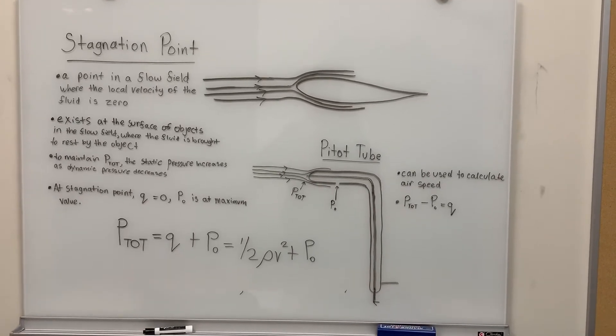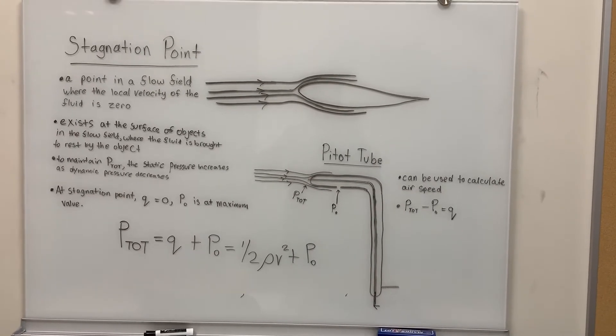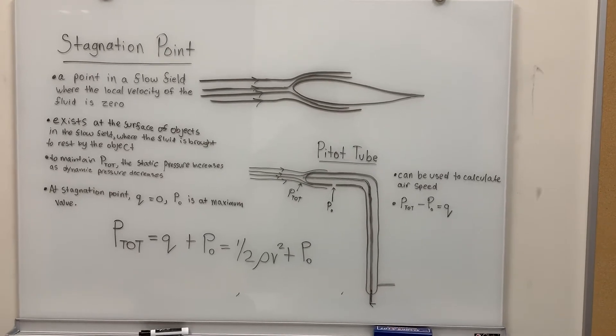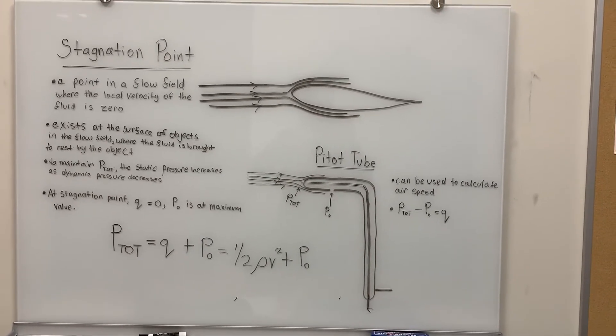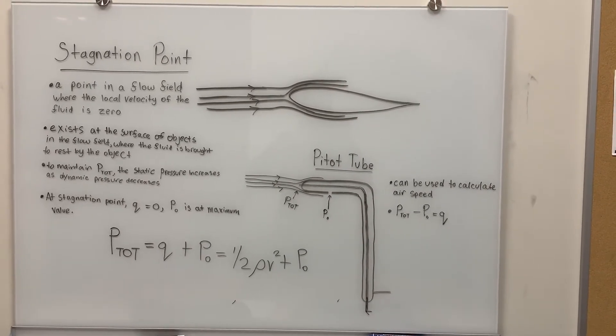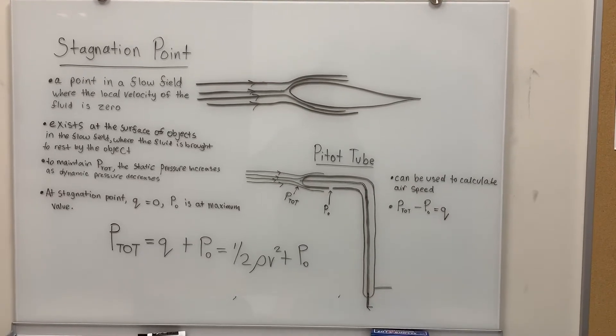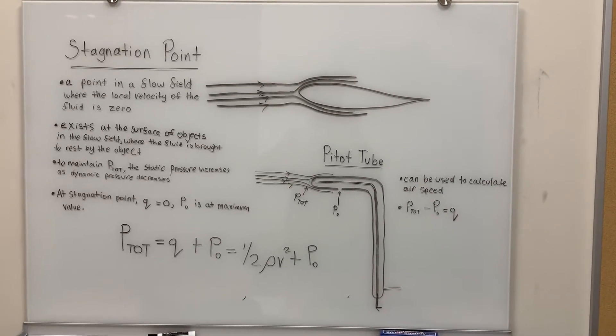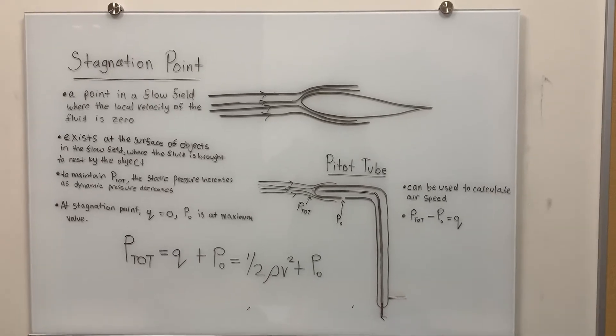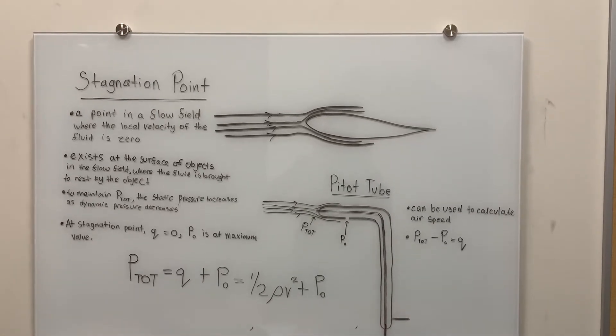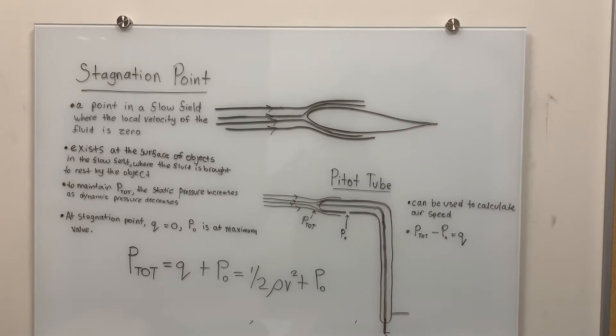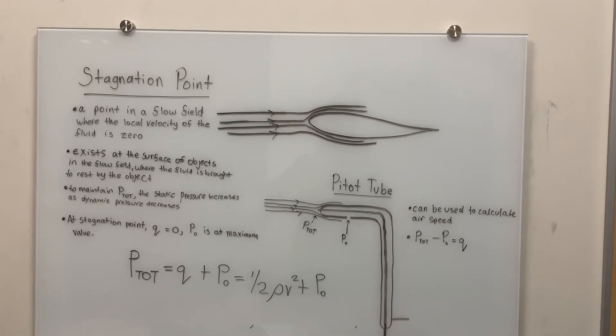A pitot tube has two holes. One is in the center of the beginning of the pitot tube, aligned to the axis. This hole measures the total pressure. It is placed in the field of air flow so that air flow hits it head on.